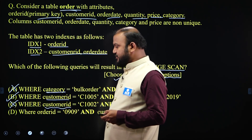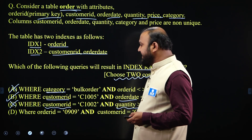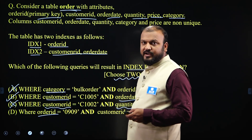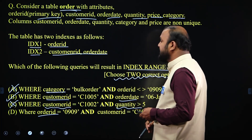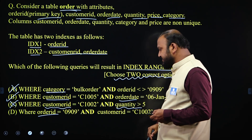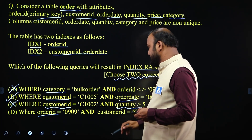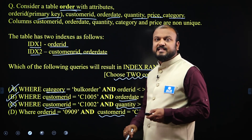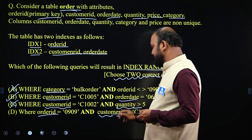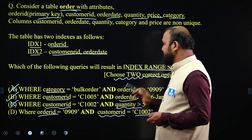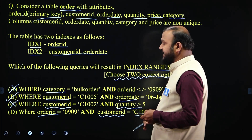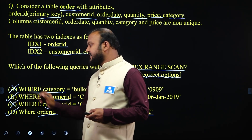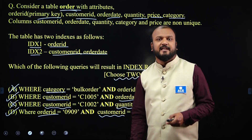Option D: where order ID equals 0909 — we have an index on order ID, so it requires an index scan. And customer ID equals C1002 — we have an index with respect to customer ID and order date, so customer ID requires index search as well. D is also a correct option. The correct answers for the question are B and D.